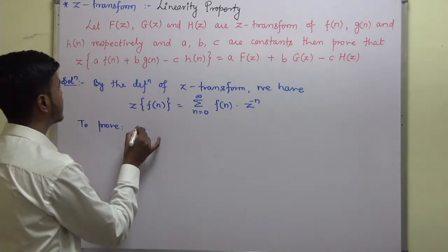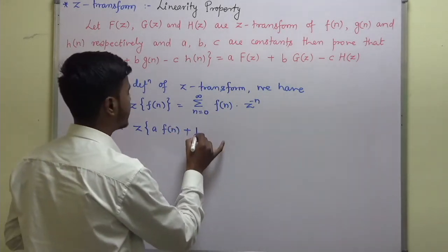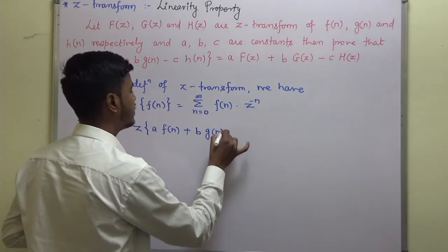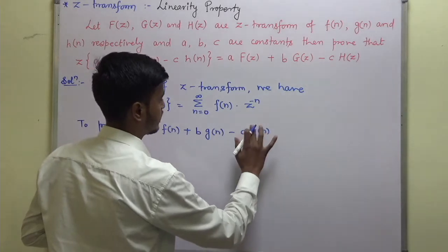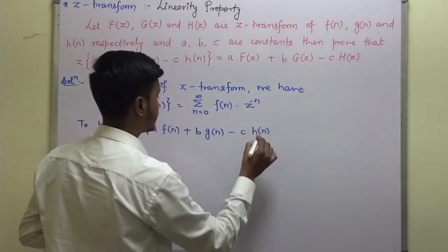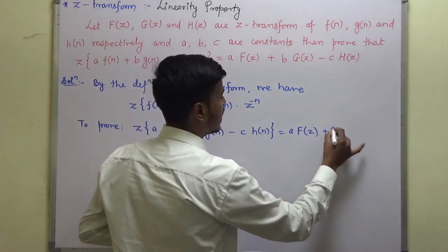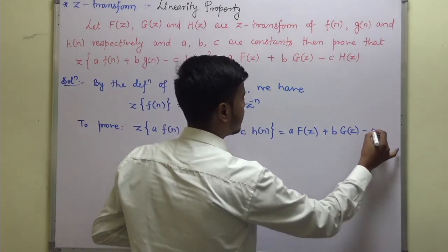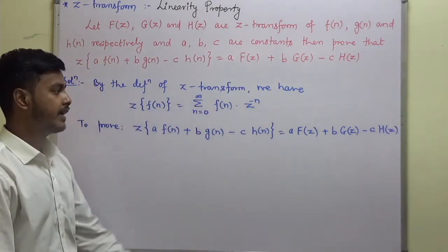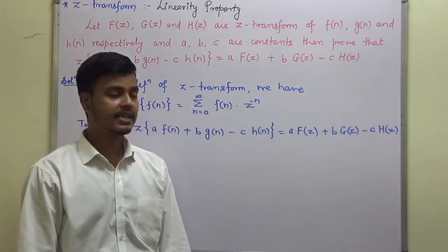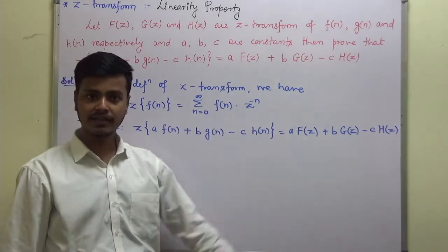Now, what we have to prove: Z-transform of A times F of N plus B times G of N minus C times H of N is equal to A times F of Z plus B times G of Z minus C times H of Z. So let us take the left-hand side and try to get the right-hand side.